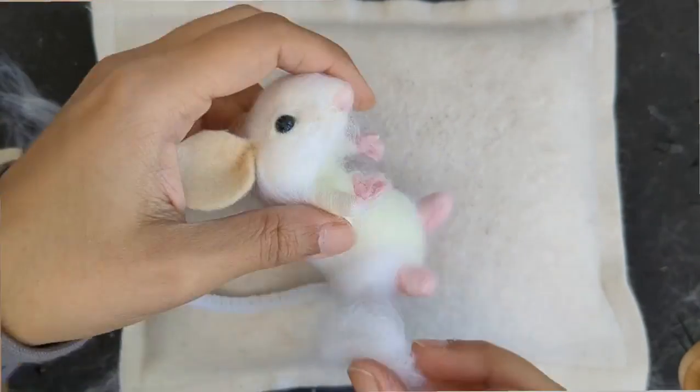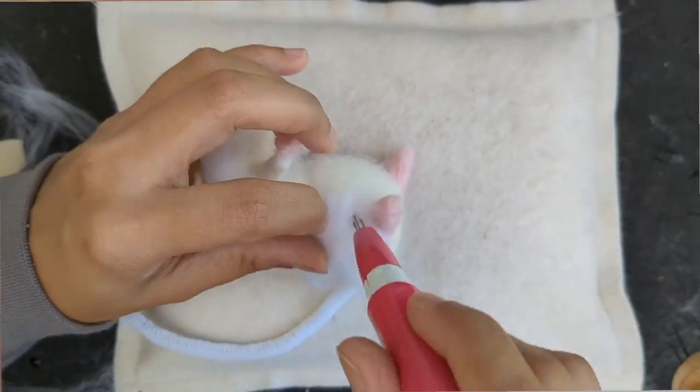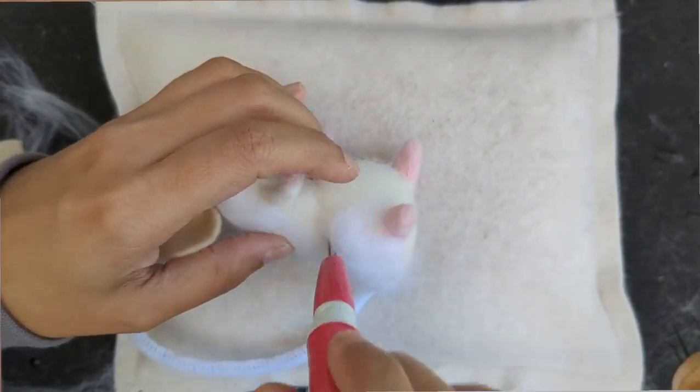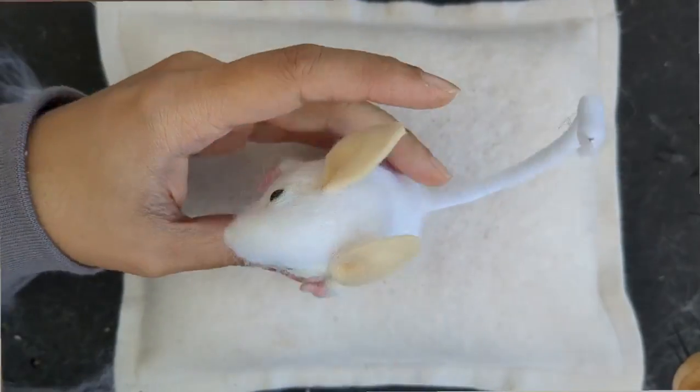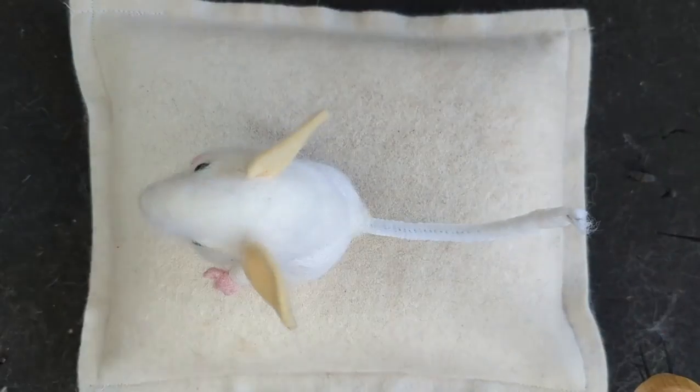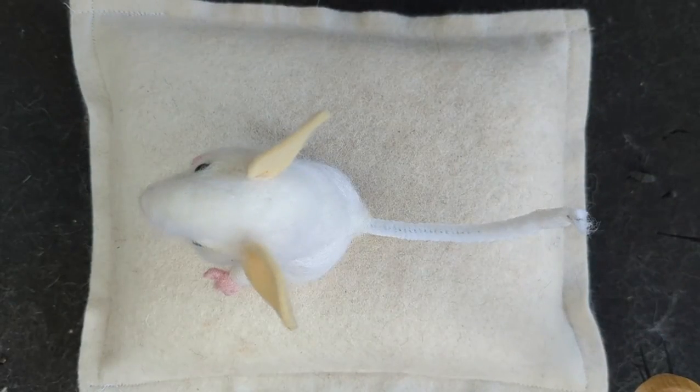And I'm going to give a little more wool to form the thighs. I'll just fold it over, the merino top. I'm going to felt it down in the shape of the thighs.